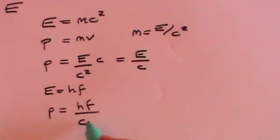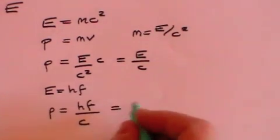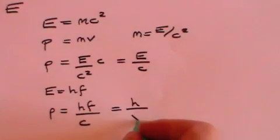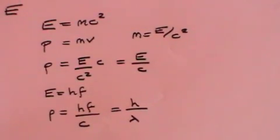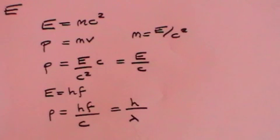But C over F is simply the wavelength. And so P equals H over lambda. The momentum of a photon is the Planck's constant divided by the wavelength of the light of which the photon is a part. So far, so good.